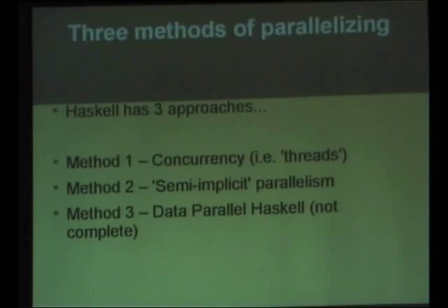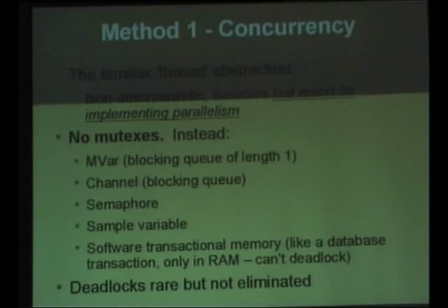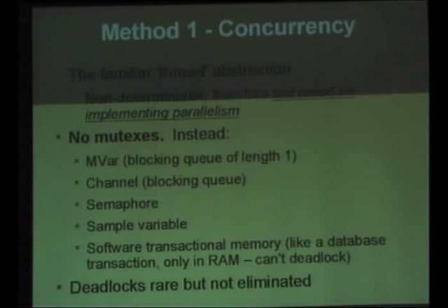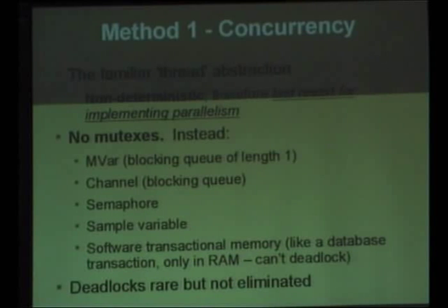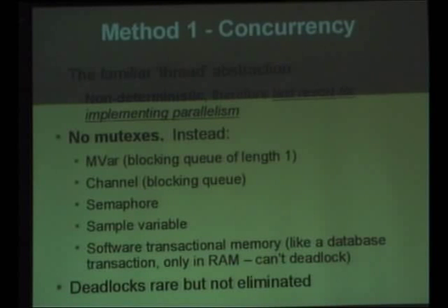There are three methods that Haskell has of parallelizing things — the last one is not complete at the moment. The first is concurrency, which is your familiar thread abstraction. It has a severe disadvantage in that it's non-deterministic: if you give it the same inputs, you're not necessarily going to get the same output, because a lot depends on the sequence — that's the great source of bugs. A thread in Haskell, when it manipulates data, does everything immutably, which means you can't have race conditions. Haskell doesn't give you mutexes; instead it gives you a variation of different kinds of pipes. However, Haskell is not as strong in distributed processing as Erlang is.